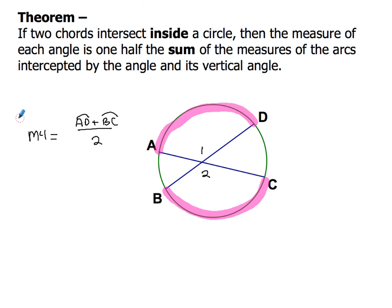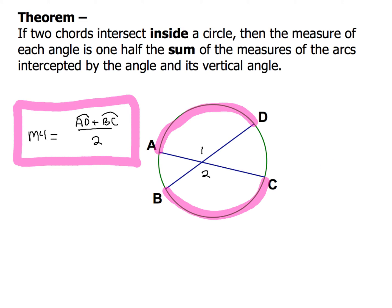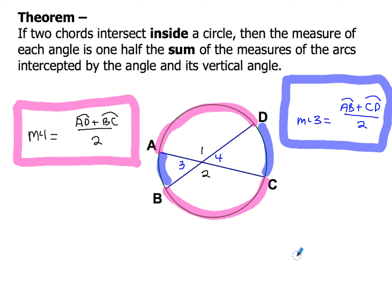Now for angles three and four, we use the other highlighter for the other two arcs: arc DC and arc AB. The measure of angle three equals arc AB plus arc DC, all divided by two. Whether you're solving for one of those angles or any of those arcs, that's the formula. To work with these problems it's always helpful to use highlighters. We've got two examples to practice.